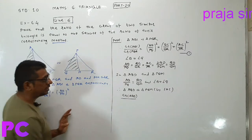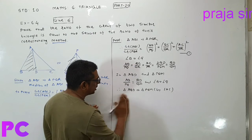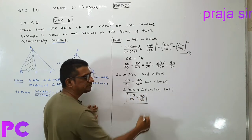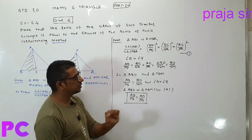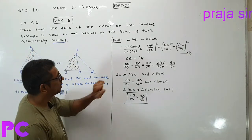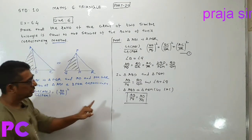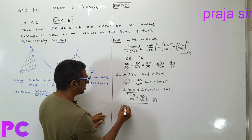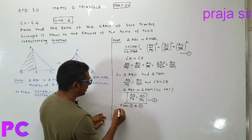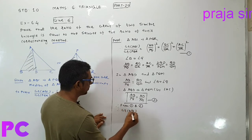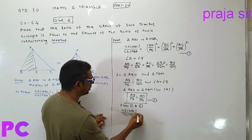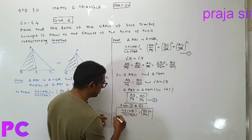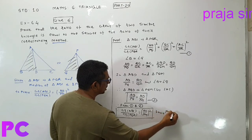Area of ABD upon PQM — AB upon PQ is equal to AD upon PM. Now what I need to bring is this result. So from result 1 and 2, area of ABC upon area of PQR is equal to AD upon PM whole square. Hence proved.